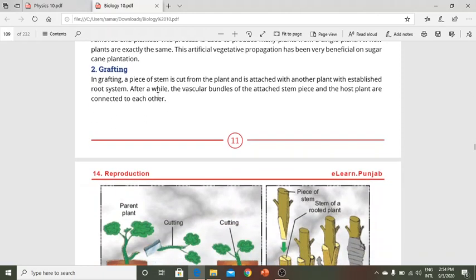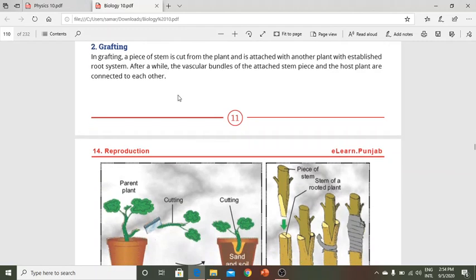In grafting, a piece of stem is cut from one plant and attached to another plant with an established root system. After a while, the vascular bundles of the host plant and the attached stem connect together.